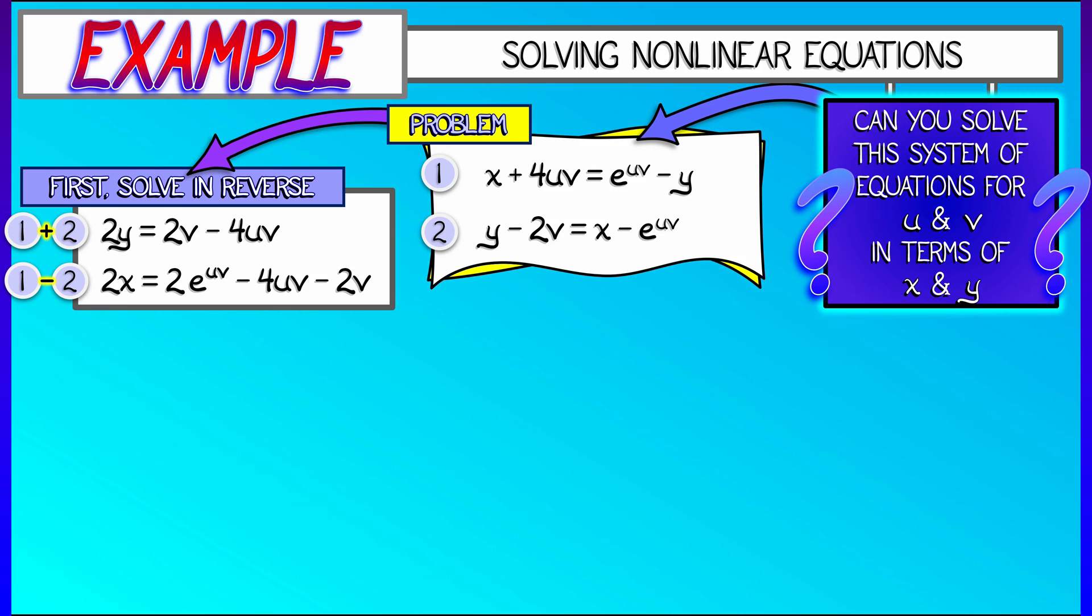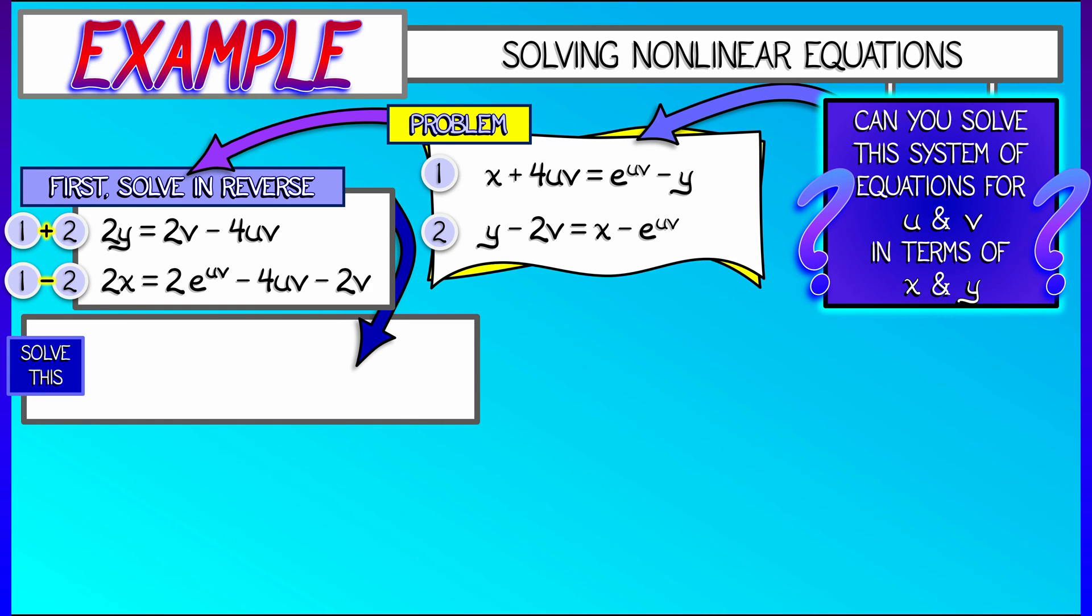Now, this is good because now I can get x and y isolated. If I divide both sides of these equations by 2, I get x equals e to the uv minus 2uv minus v, and y equals v minus 2 times u times v. I'm going to consider this as a function of u and v.